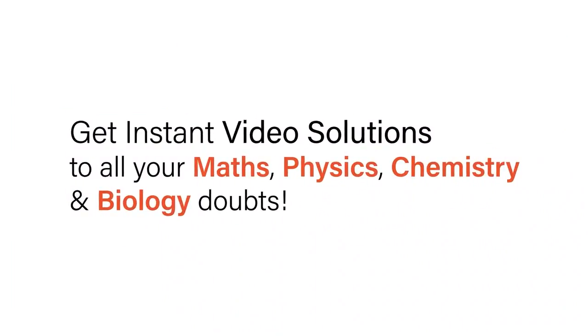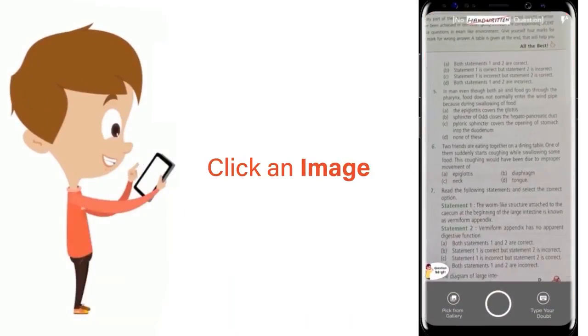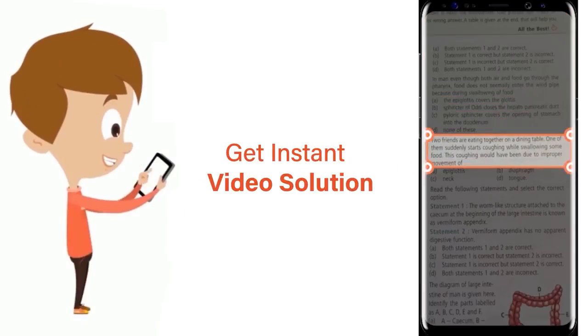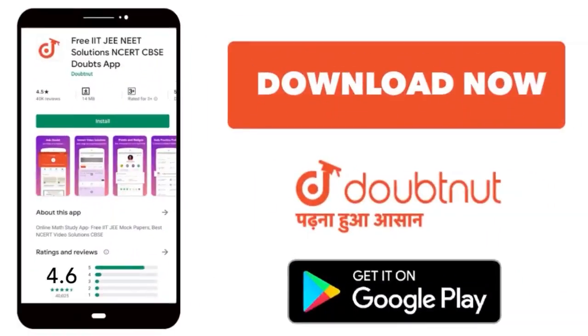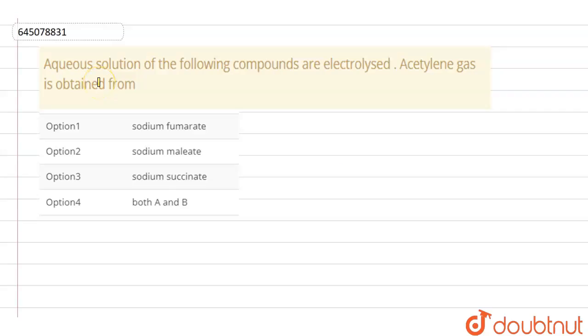With Doubtnet, get instant video solutions to all your maths, physics, chemistry, and biology doubts. Just click the image of the question, crop the question, and get instant video solution. Download Doubtnet app today. Hello students, so the question is aqueous solution of the following compounds are electrolyzed, acetylene gas is obtained from.